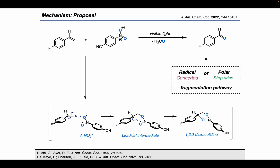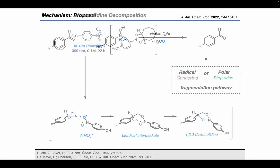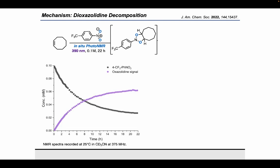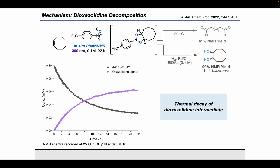It was hypothesized that there were two possibilities, a radical concerted mechanism or a polar stepwise mechanism. We decided to probe into these possibilities. But before we investigated the pathways, we wanted to know if the decomposition of the dioxazolidine was thermally or photochemically promoted. So we took cis-cyclooctene, did another photo-NMR experiment, and found that this cycloaddition adduct was stable over 22 hours at room temperature, as you can see by this concentration versus time graph in purple. We were able to isolate this adduct, then heat it to 60 degrees, where we were able to see a 41% yield of the dialdehyde cleavage product. This experiment told us that the decay of dioxazolidine is thermally promoted. We then took another portion of the dioxazolidine and subjected it to hydrogenation conditions, and we were able to get a 90% NMR yield of the dihydroxylated product that also was in a 1-to-1 cis-to-trans ratio.